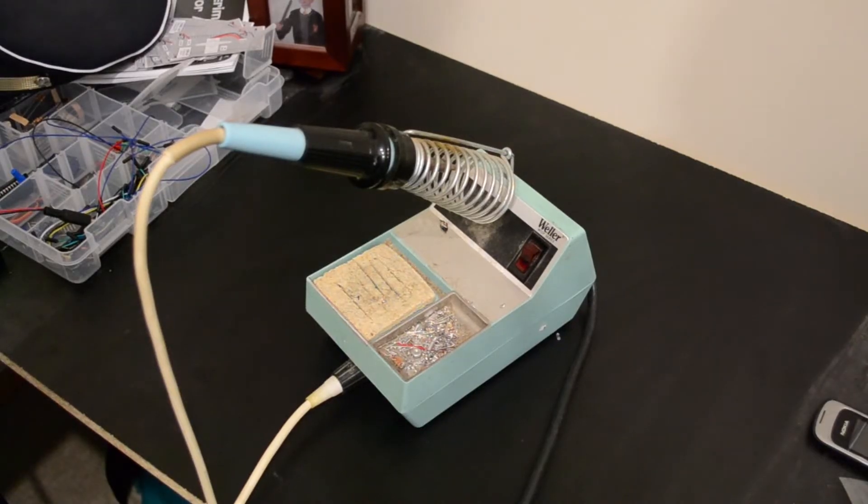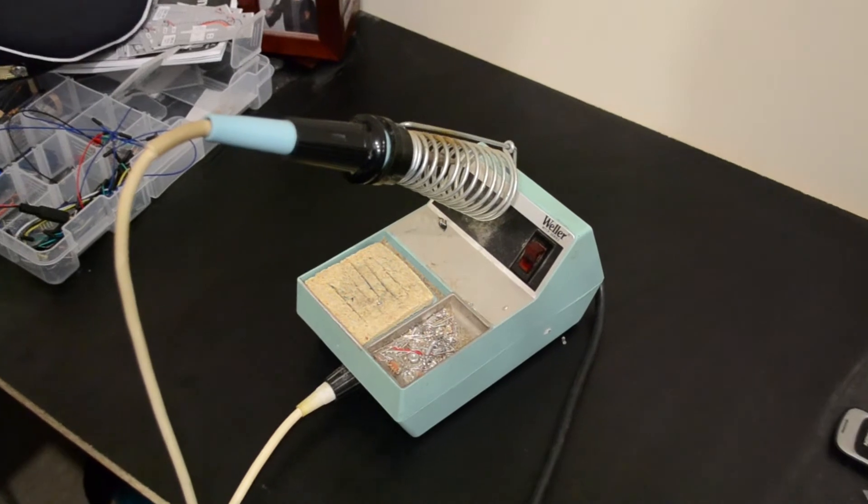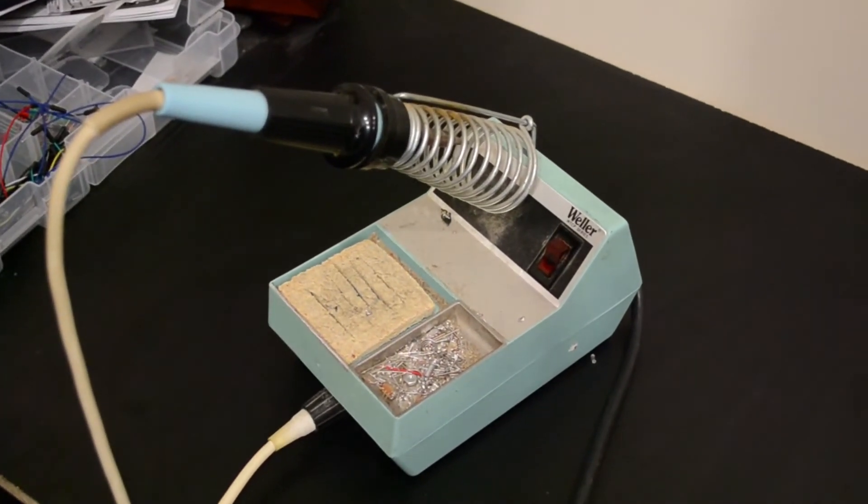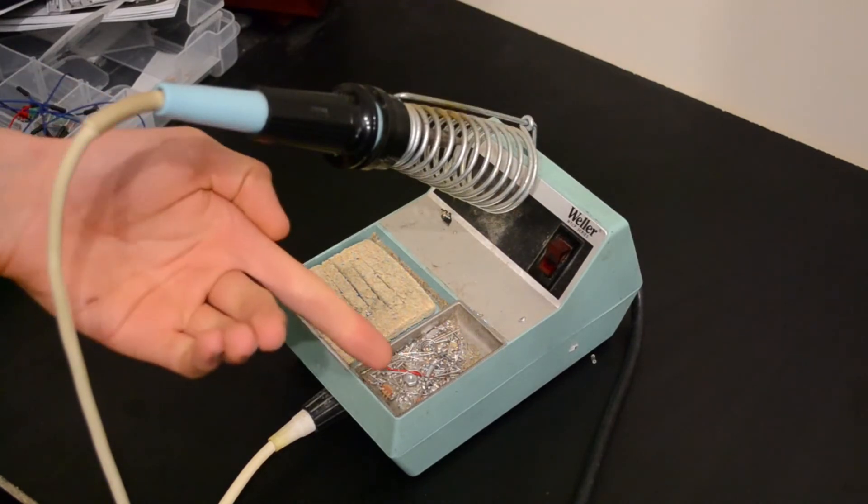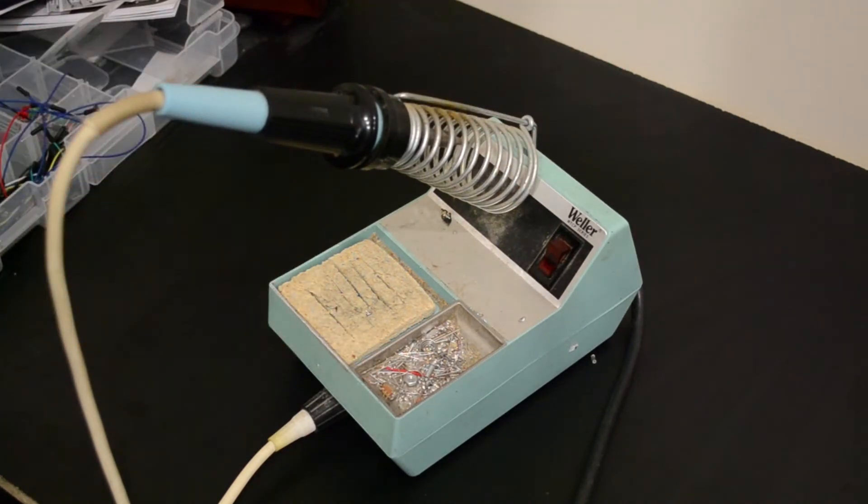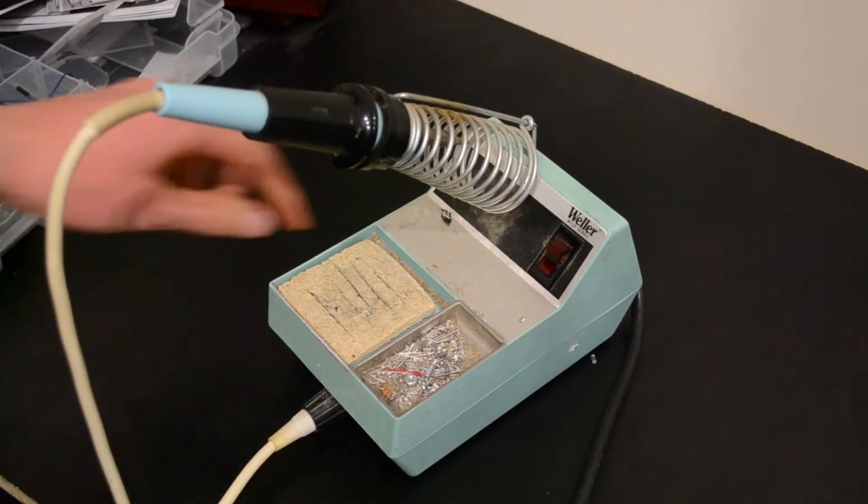This is a pretty typical soldering station, although you can use just a plain Jane soldering iron, too. In this case, we've got a separate power switch, and a handy holder for a sponge. The sponge is actually pretty useful, so you want to keep one of these handy.